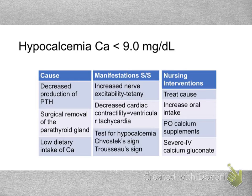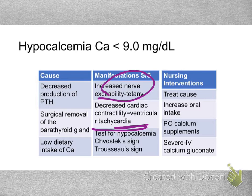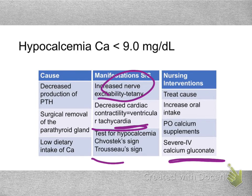If calcium is low, we can see nerve excitability and ventricular tachycardia. We want to increase calcium levels through oral intake and calcium supplements. In severe cases, we can give calcium gluconate, which increases calcium and also helps prevent dysrhythmias. You'll want to know about Chvostek's and Trousseau's signs — simple assessments nurses can do to assess whether a patient might be hypocalcemic, followed by a blood test to confirm.